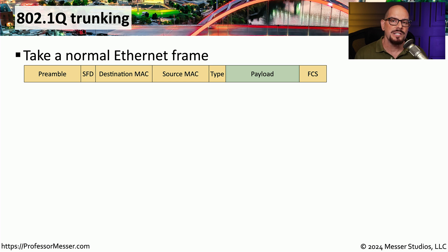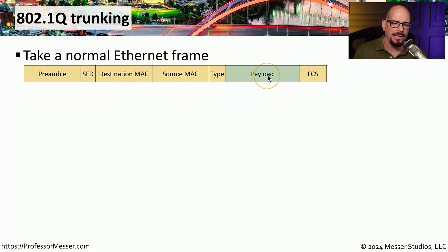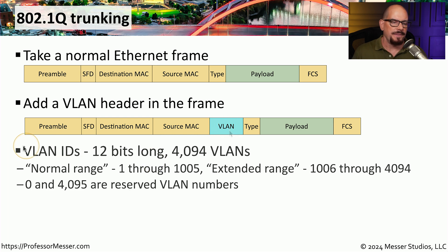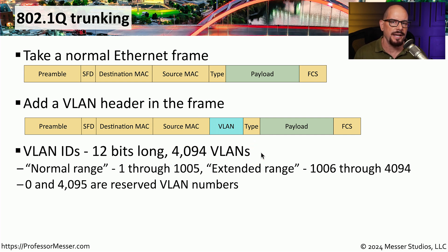The trunk connection keeps track of traffic by tagging each frame. A normal ethernet frame has a preamble, a start frame delimiter, a destination MAC, a source MAC, a type, a payload, and a frame check sequence. To add VLAN information, we insert an additional field right after the source MAC address — this is called the VLAN tag. These VLAN tags are 12 bits long, and not counting reserved VLAN numbers, we can have a total of 4,094 VLANs traversing that trunk connection.